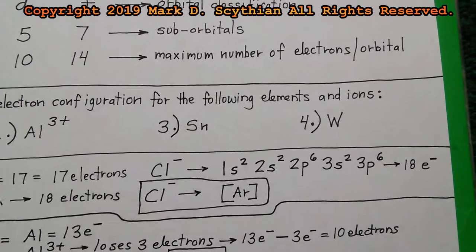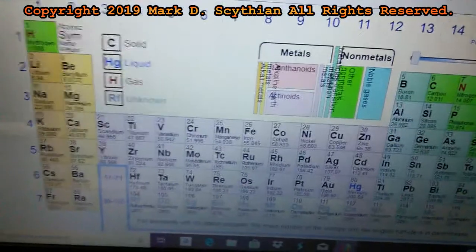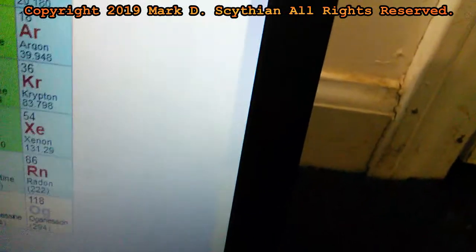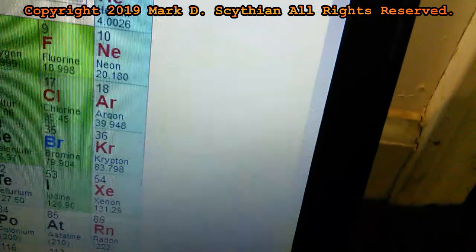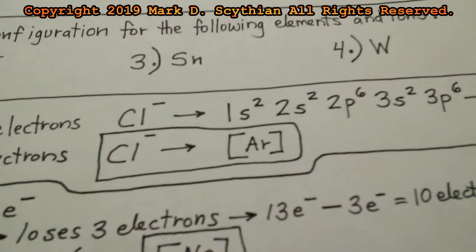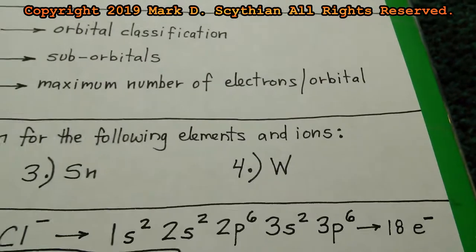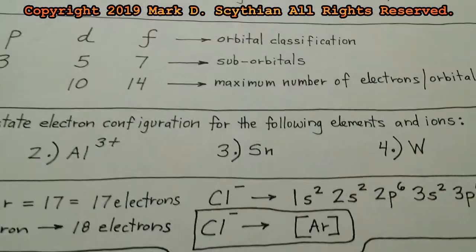Many times you have to abbreviate the configuration using the stable inert gases — helium, neon, argon, krypton, xenon, radon — which are not caught up in the electronegativity differentials of the rest of the periodic table. Since we're dealing with 18 electrons, the abbreviated electron configuration for chloride would be argon in brackets. Many tests and exams will ask for this abbreviated form rather than the longhand sequence.